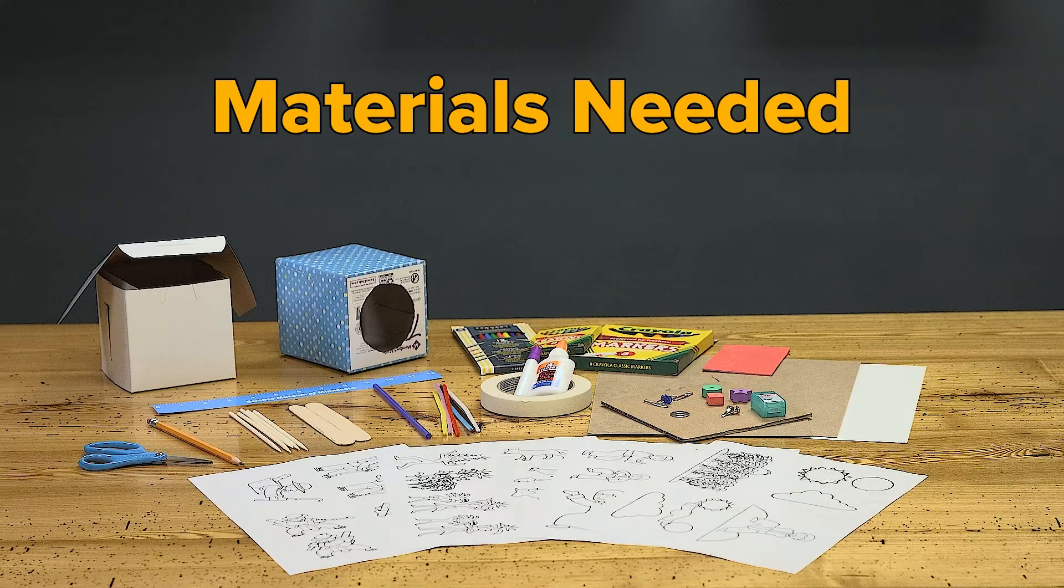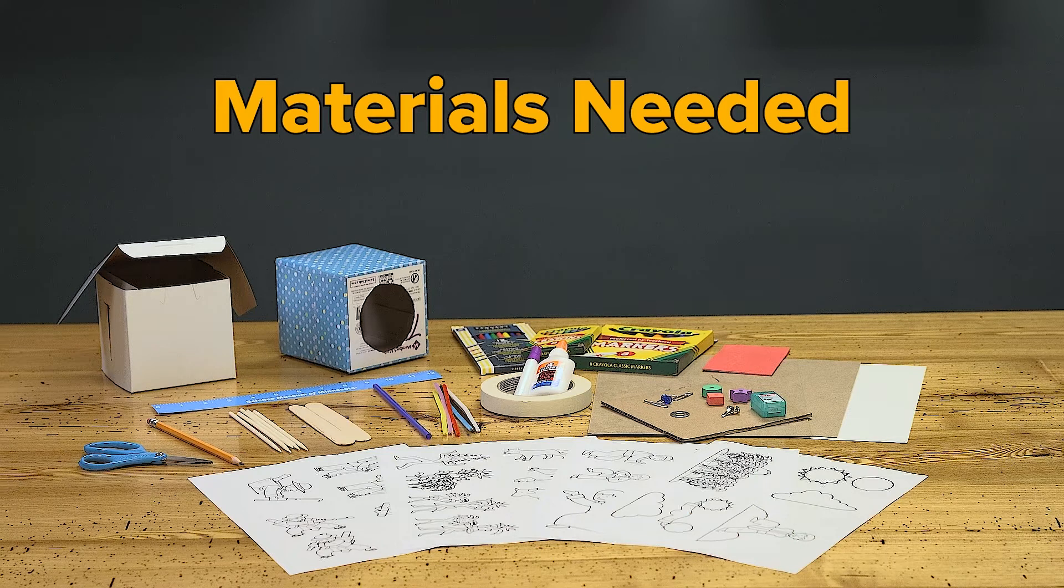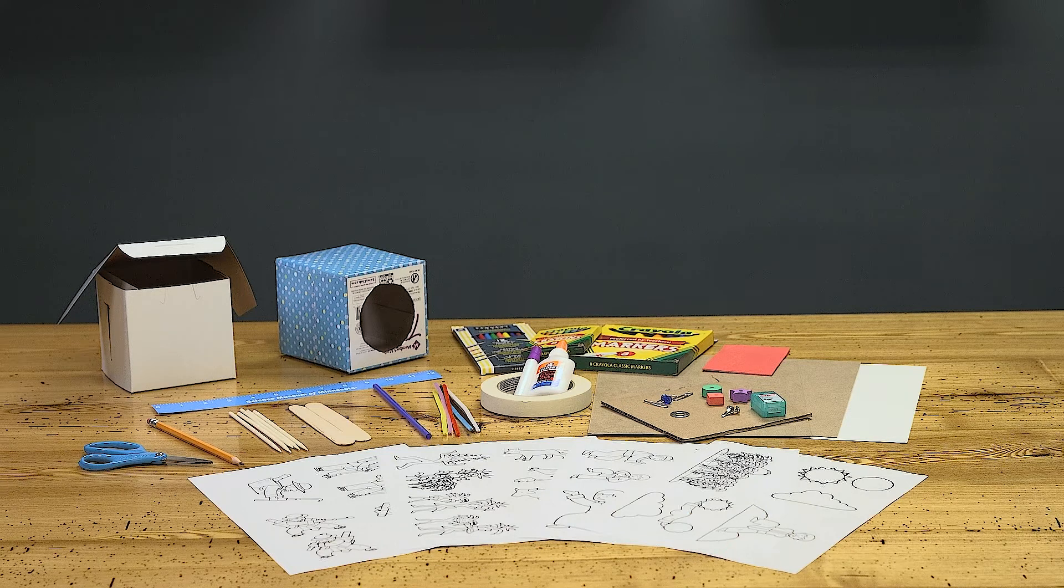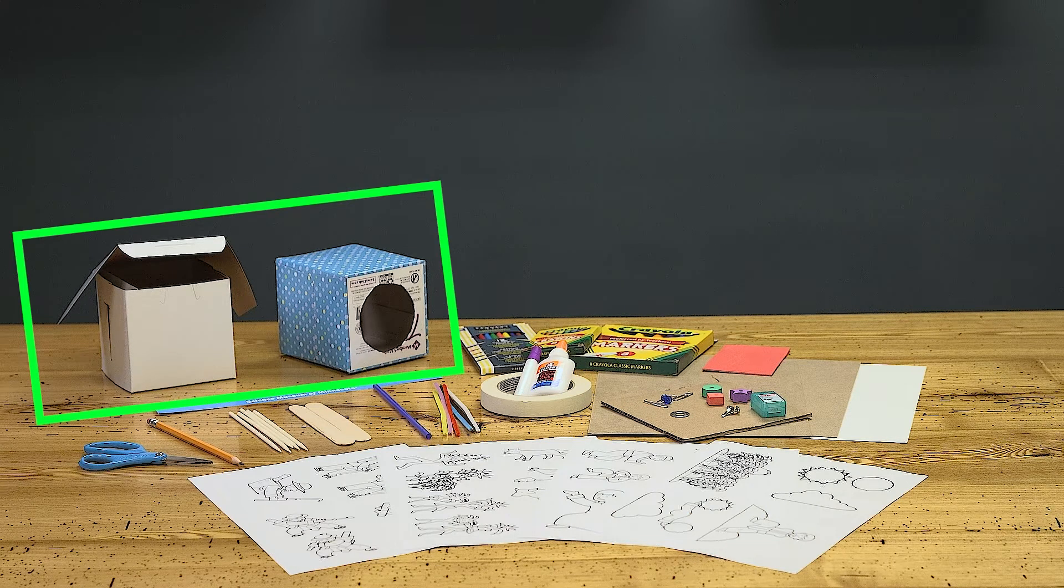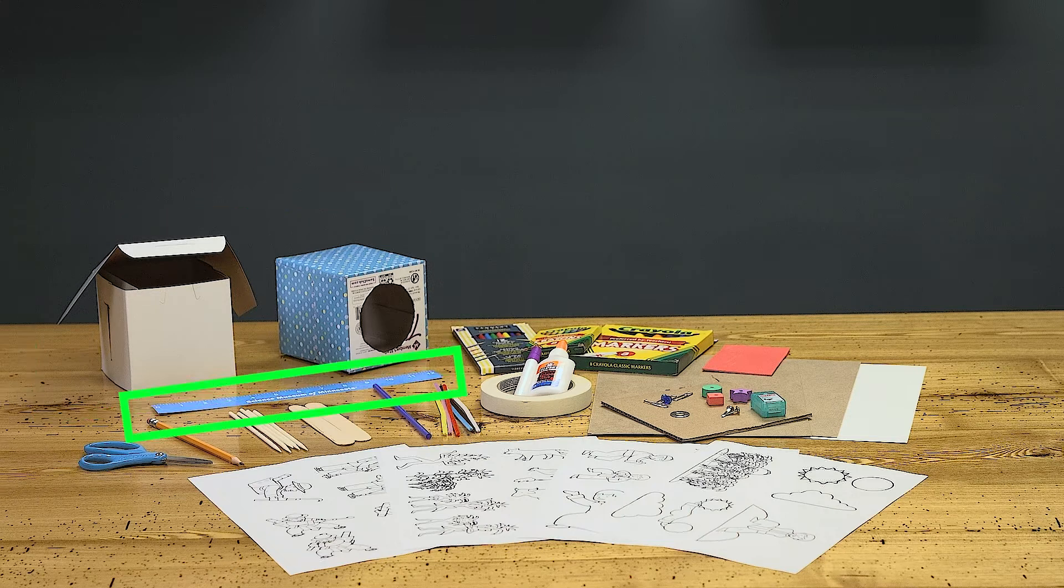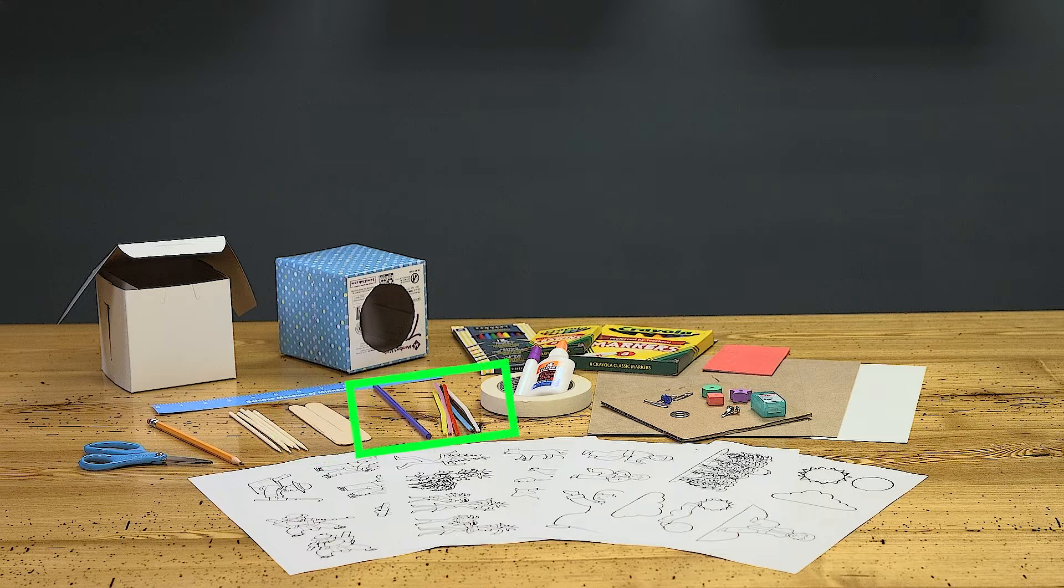Here are all the materials you can use to make any of these storytelling devices. Small tissue size boxes, ruler, wooden bamboo skewers, craft sticks, drinking straw, masking tape.